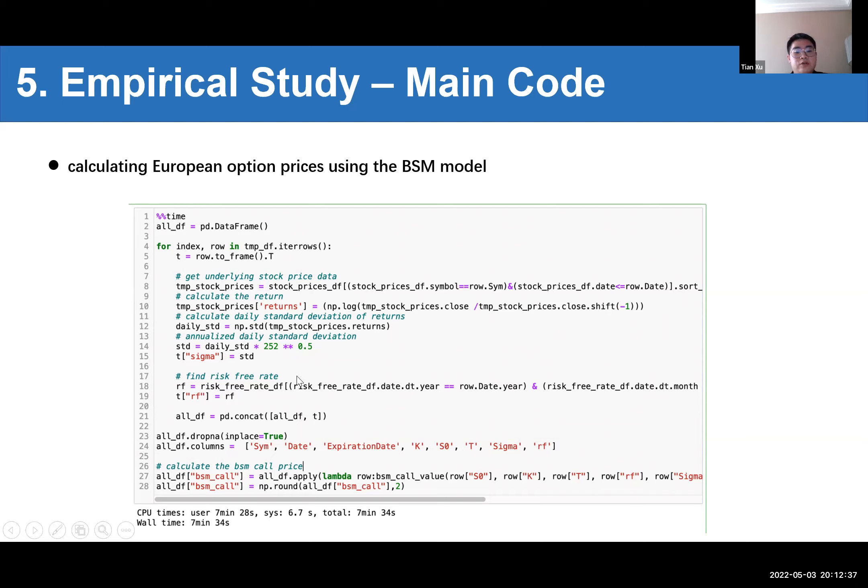And hence historical volatility of the option underlying separately in here. Also, we need the risk-free rate. In this project, I used the U.S. Treasury bill one-year rate. In that case, a data frame is created, and the BSM call value function is passed in the apply function to calculate the option price for each row. We can notice it takes about seven minutes to finish all calculations for all data.